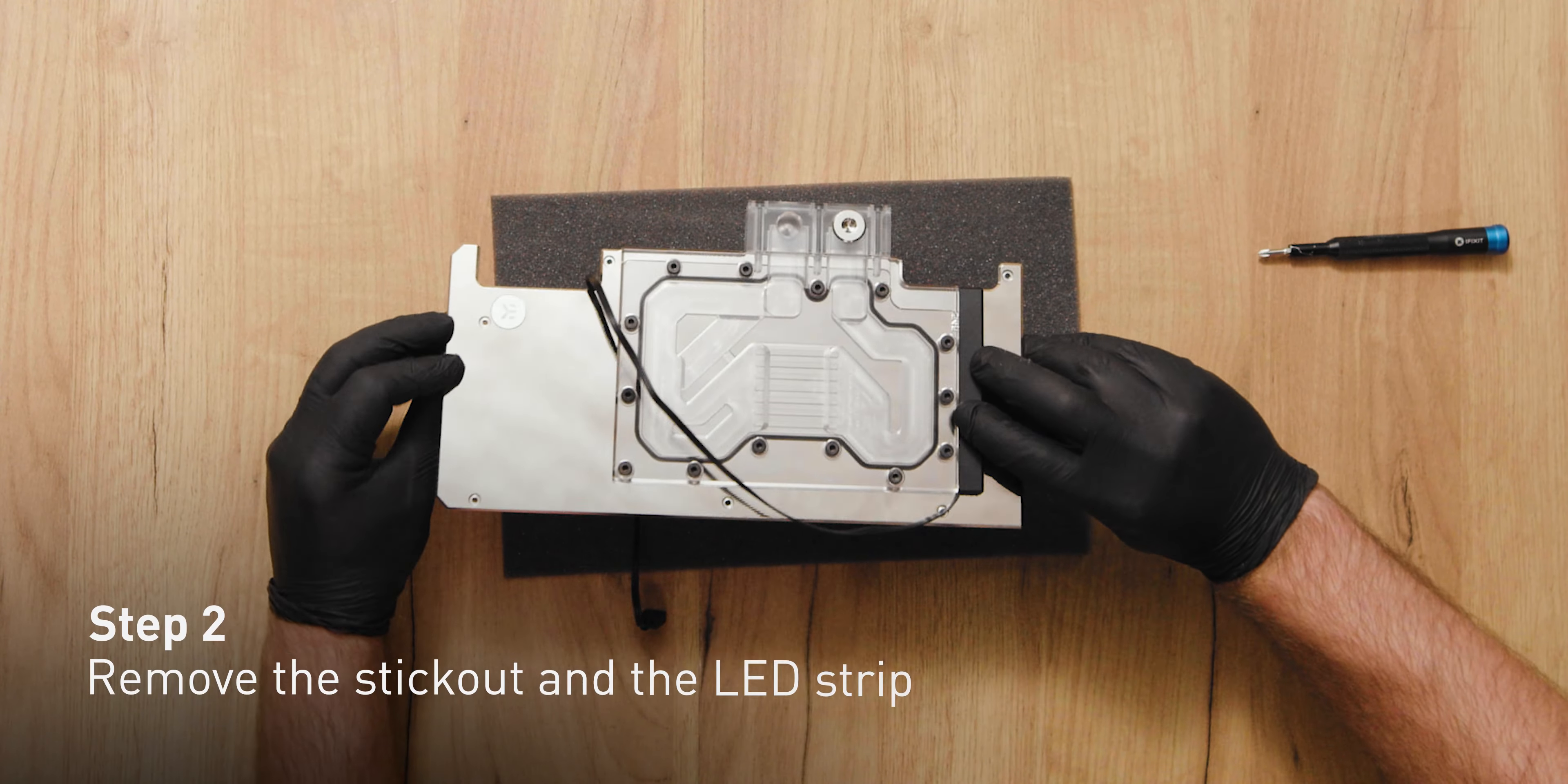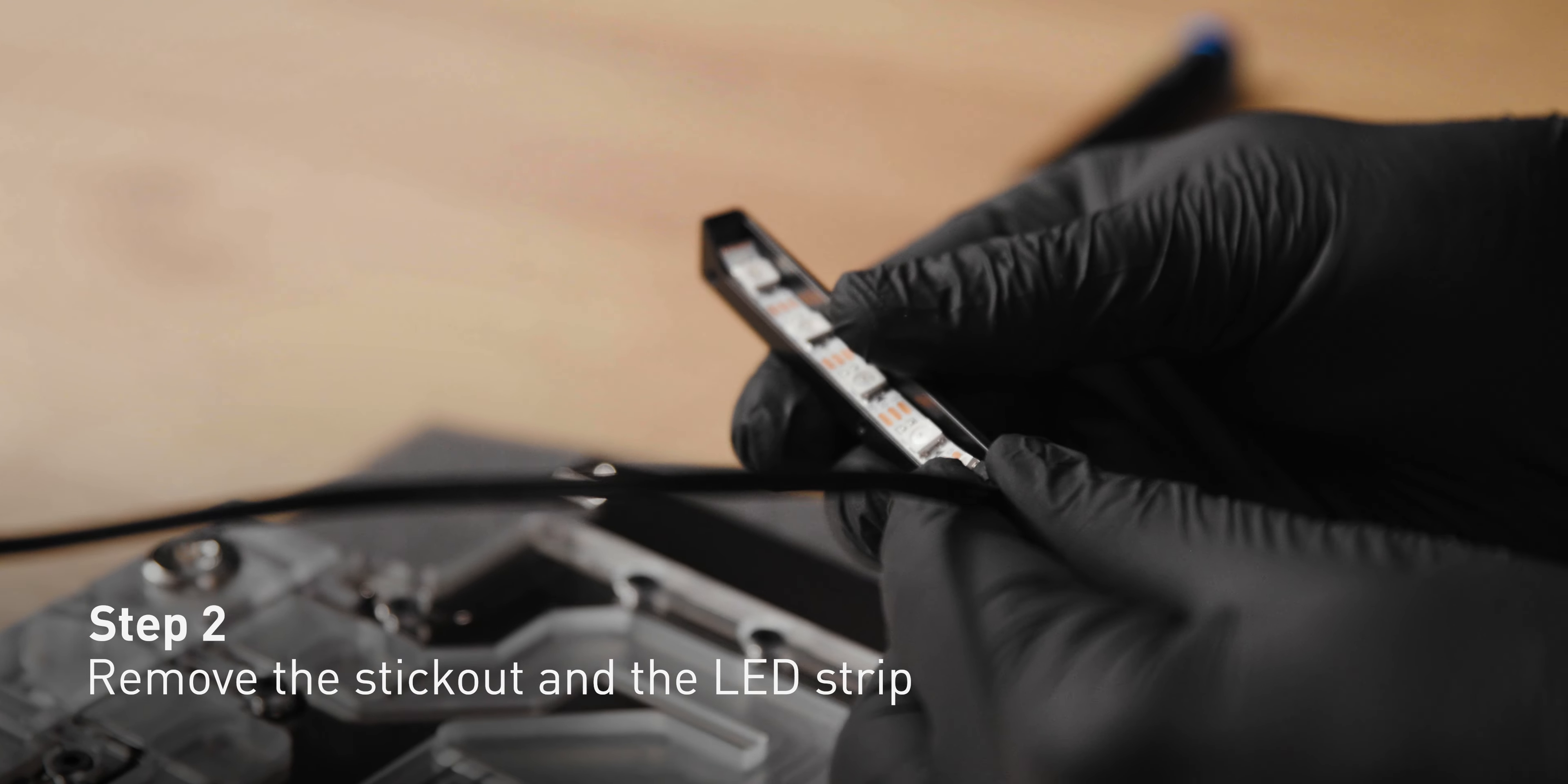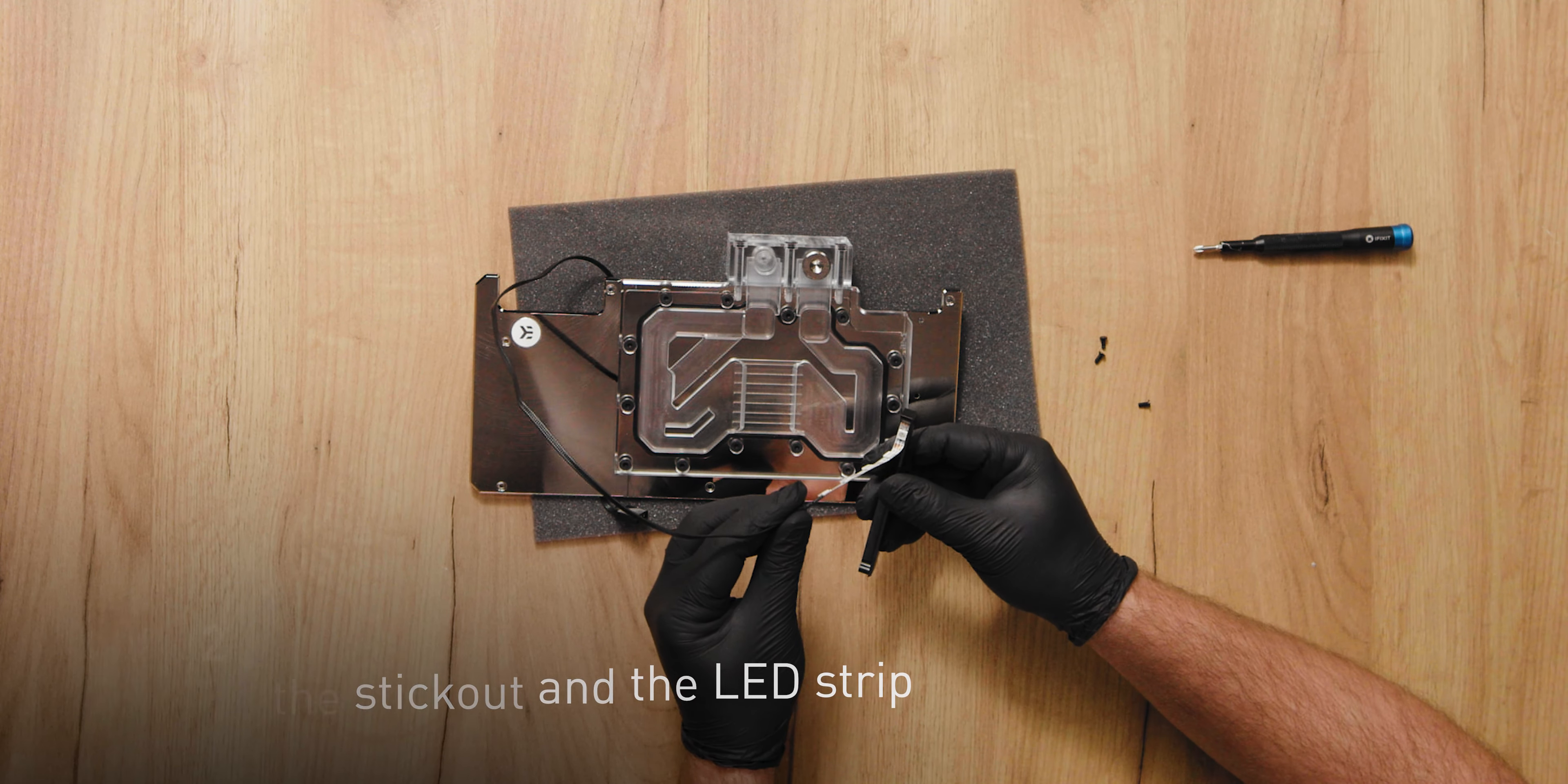Step 2. Rotate the block and remove the stick out. Pull the LED strip from the stick out's groove. Note that it is held in place with double sided tape.